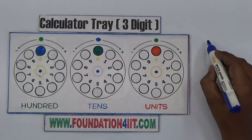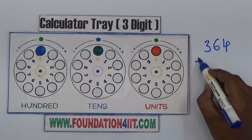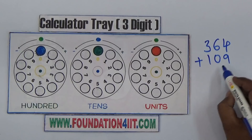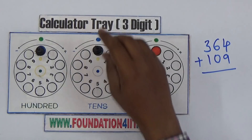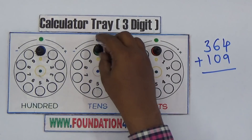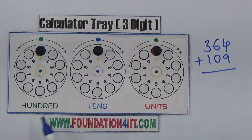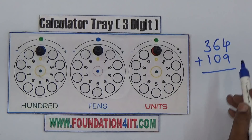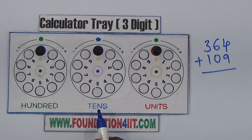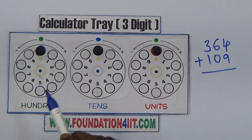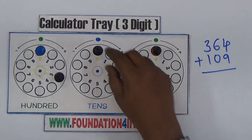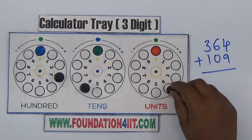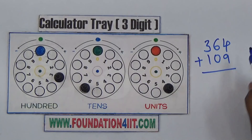For example, if I want to add 364 plus 109, first I set all positions to zero. Units, tens, and hundreds all start at zero. Now for 364: the hundreds place is 3, so I keep the third circle at 3. Then 6 for the tens circle, and 4 for the units circle. This is the first number, 364, now set on the tray.